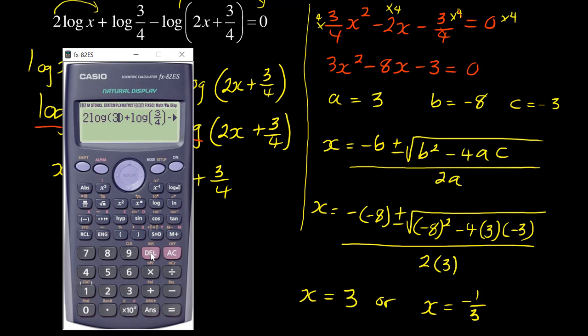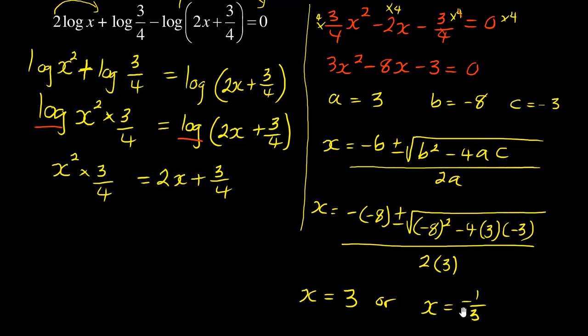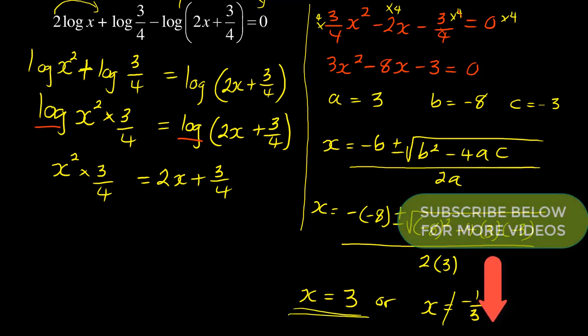Putting negative 1 over 3 in the equation, I'm getting an error, which means x is not equal to negative 1 over 3. So my answer in this case is x equals 3.